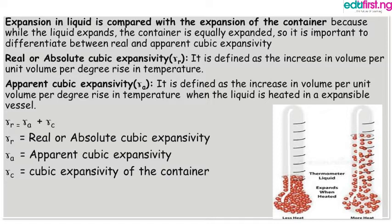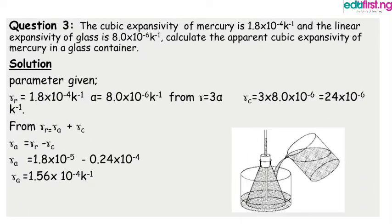In this formula, gamma subscript r is the real or absolute cubic expansivity, gamma subscript a is the apparent cubic expansivity, and gamma subscript c is the cubic expansivity of the container. Here we have an example: the cubic expansivity of mercury is 1.8 times 10 to the power minus 4 per Kelvin and the linear expansivity of glass is 8.0 times 10 to the power minus 6 per Kelvin. Calculate the apparent cubic expansivity of mercury in a glass container.